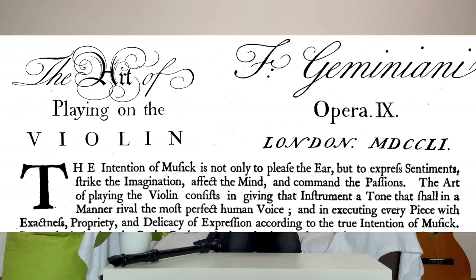Even so, the earlier sources make it clear that vibrato wasn't a continuous sound quality but rather an ornament. So we're first going to look at vocal vibrato because the voice in early music has always been a point of reference for the instruments — they would imitate the voice on many occasions. For example, this is what Geminiani says: 'The art of playing the violin consists in giving that instrument a tone that shall in a manner rival the most perfect human voice.'